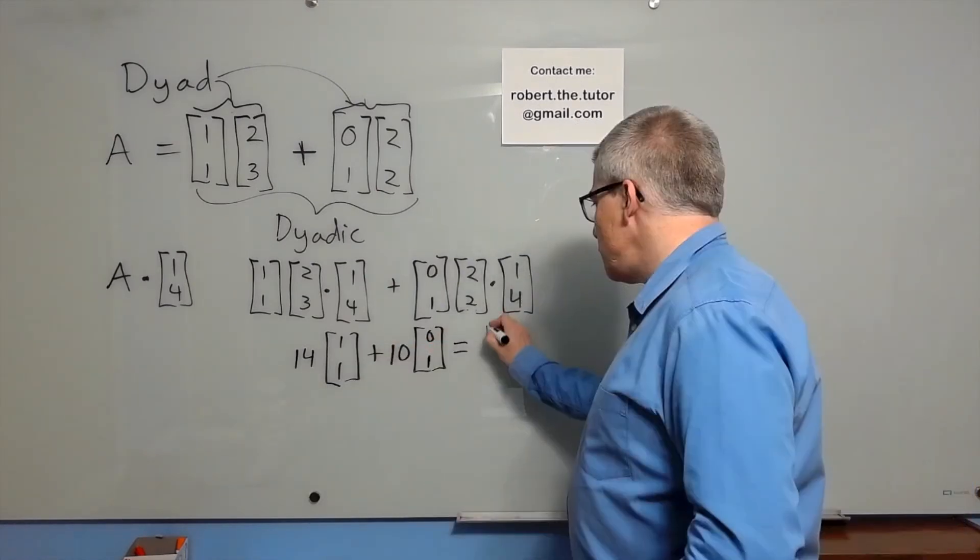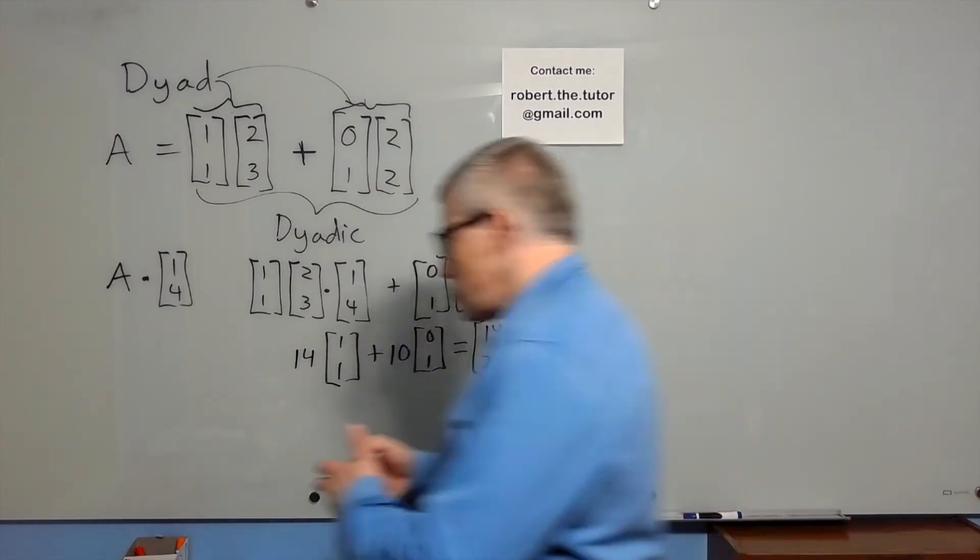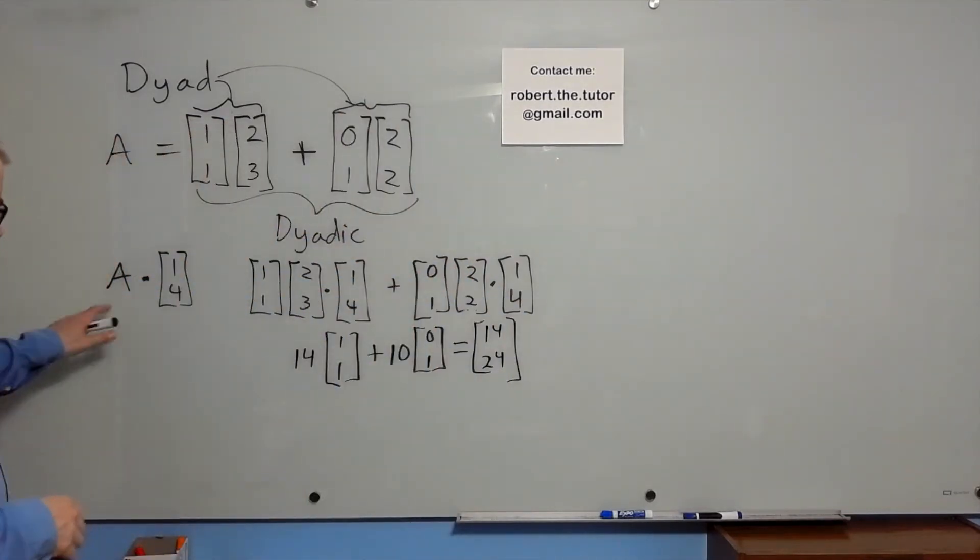In other words, you get a vector. So if you have a dyadic, and you dot it with a vector, you get a vector.